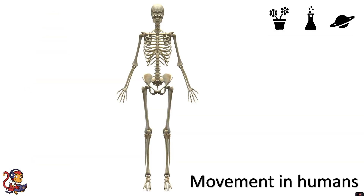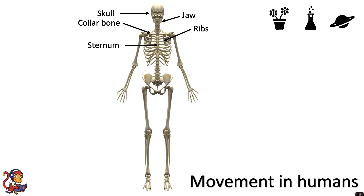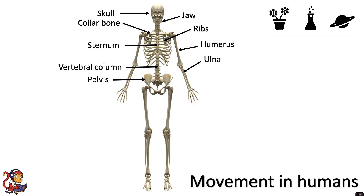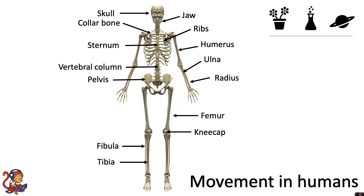Some of the major bones in your body include your skull, your jaw, collarbone, ribs, your sternum, your vertebral column, your pelvis, your humerus, ulna, radius, femur, kneecap, fibula, and tibia. Obviously these are not all of your bones because you have 206 in total, but these are some of the major bones.